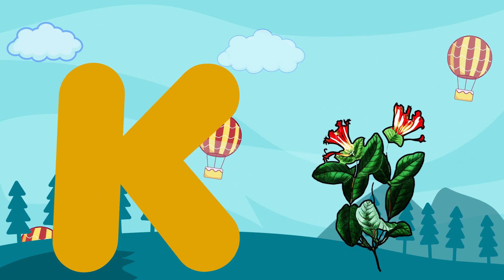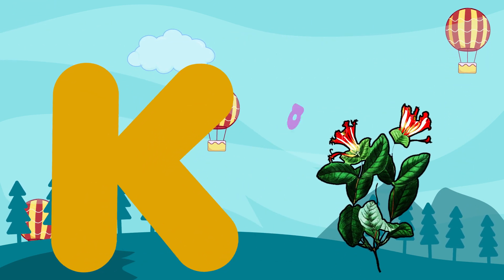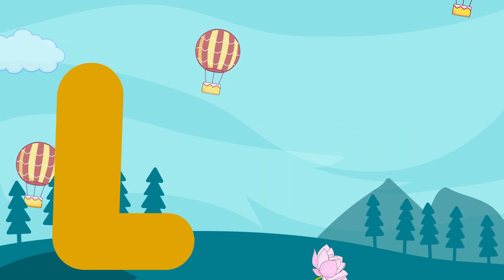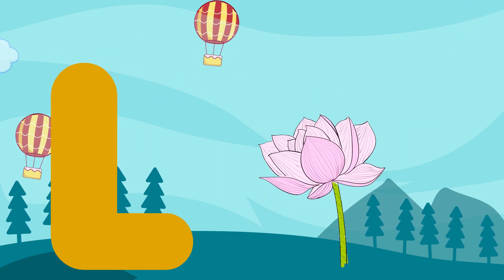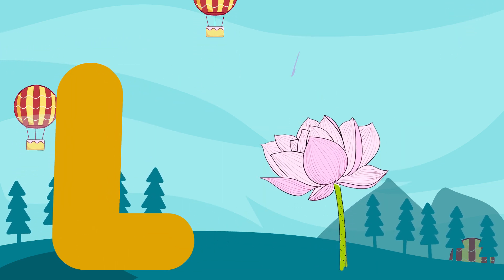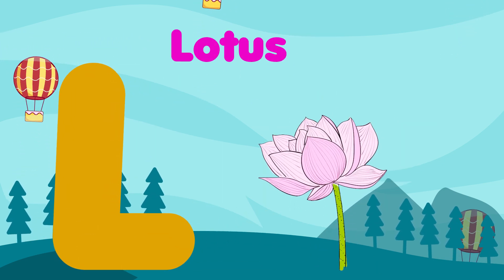K is for Kalmia. Kalmia. L is for Lotus. Lotus.